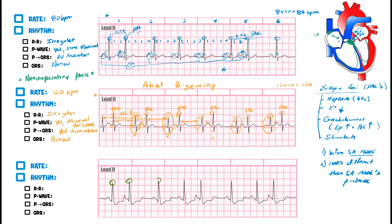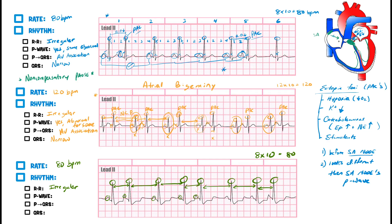Moving to the third EKG: counting R waves — one through eight — eight times ten equals 80 beats per minute. For rhythm, the R-to-R intervals are inconsistent — going short, then long, then short again — so this is definitely irregular.